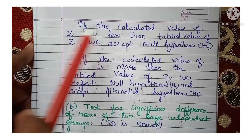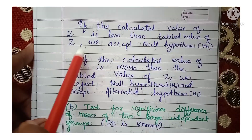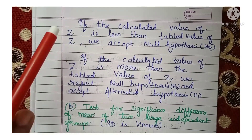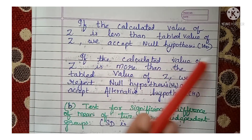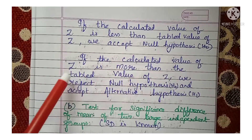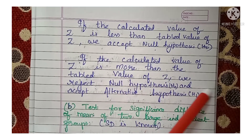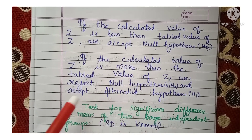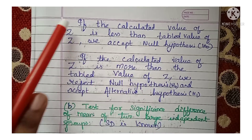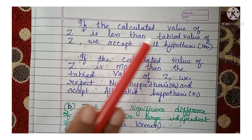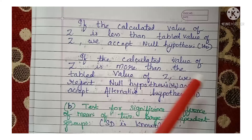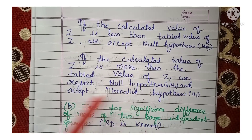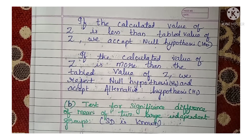The inference is as follows: if the calculated value of |Z| is less than the table value of Z, we accept the null hypothesis H₀. If the calculated value of |Z| is greater than the table value of Z, we reject the null hypothesis H₀ and accept the alternative hypothesis H1.